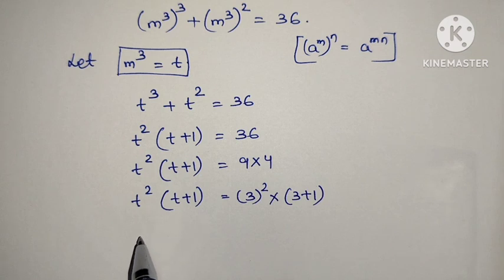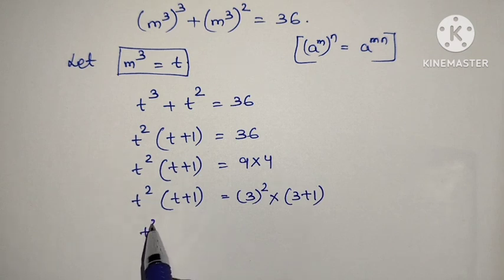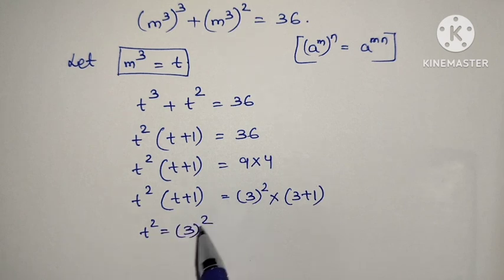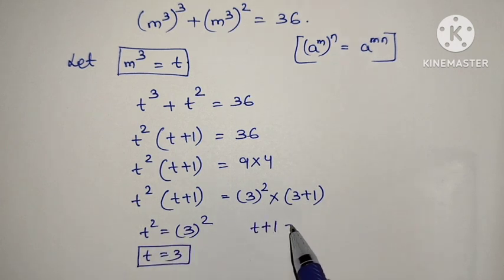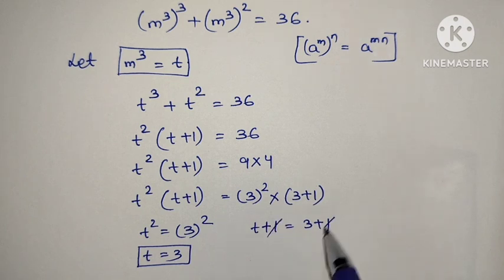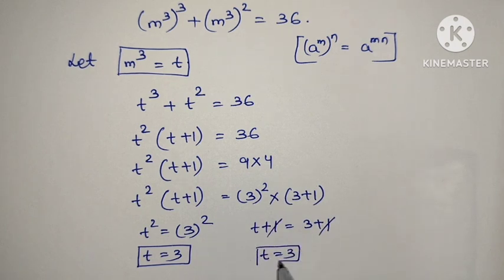Then what is the value of t? The value of t squared is equal to 3 squared, so t is equal to 3. Also, t plus 1 is equal to 3 plus 1, and both sides have plus 1 cancelled. Then t is equal to 3.